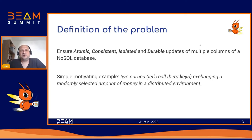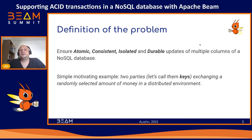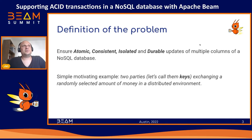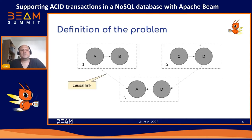And this is our motivating example. We have two parties — we'll call them keys because they are keys in the database — and they are exchanging a randomly selected amount of money in a distributed environment. This is the most typical case of a transaction that everyone knows.